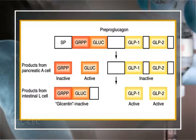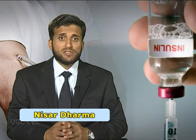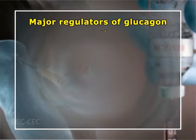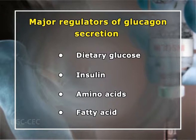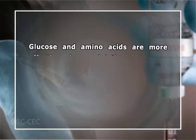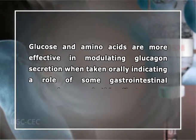Glucagon plays an important role in the regulation of glucose and ketone body metabolism. The major regulators of glucagon secretion include dietary glucose, insulin, amino acids, and fatty acids. Glucose and fatty acids inhibit glucagon secretion, while amino acids stimulate its release. Glucose and amino acids are more effective in modulating glucagon secretion when taken orally, indicating a role of some gastrointestinal hormone in this effect. Somatostatin also inhibits glucagon secretion.